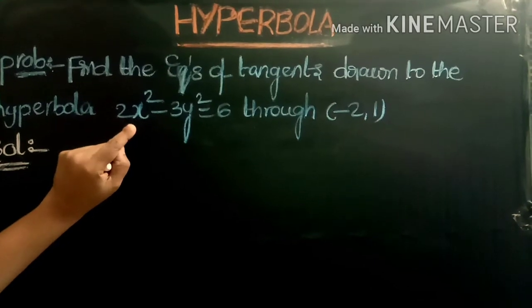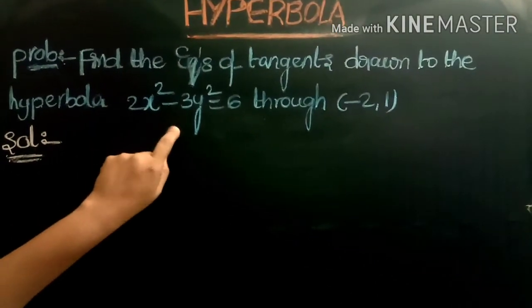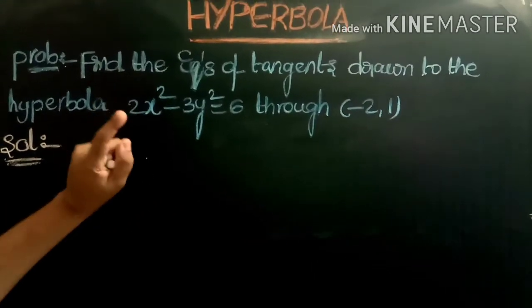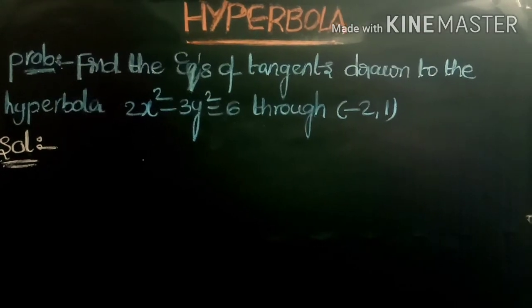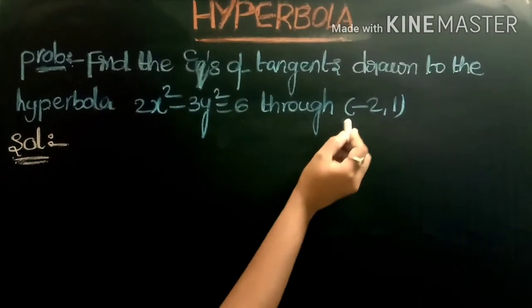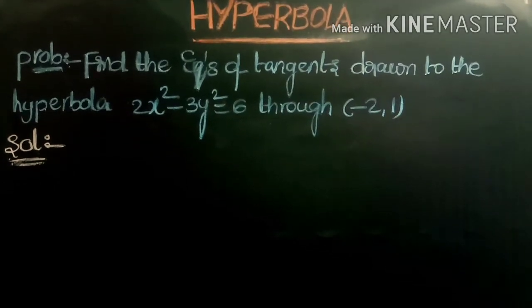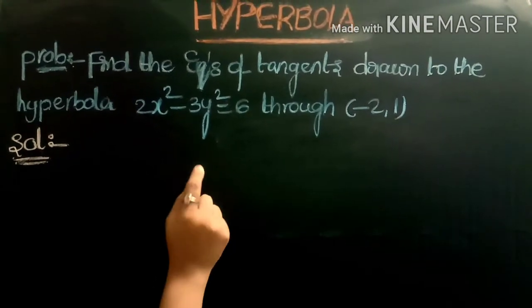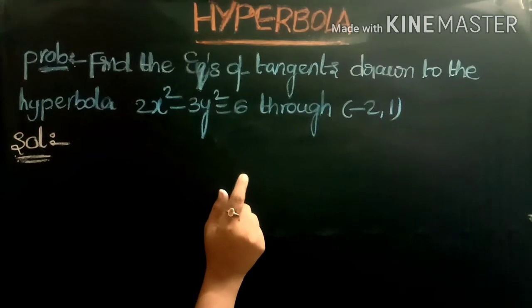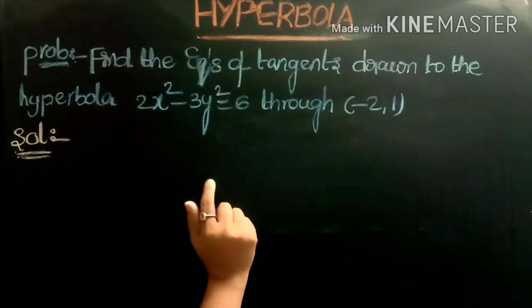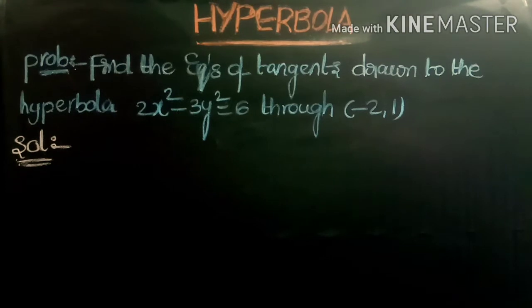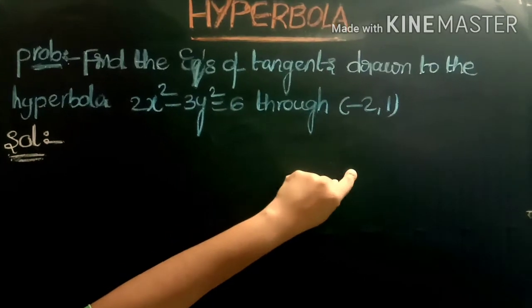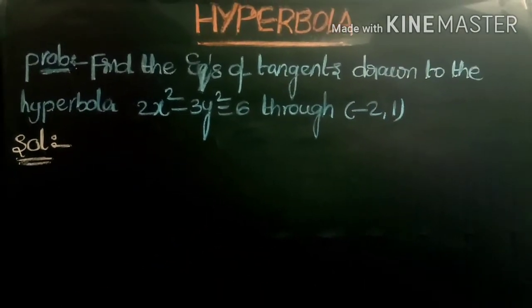Next problem: Find the equations of tangents drawn to the hyperbola 2x squared minus 3y squared equals 6 through the point (-2, 1). We use the equation of the tangent with slope m: y equals mx plus or minus square root of (a squared m squared minus b squared). We substitute the a squared and b squared values and the given point to find m, then determine the tangent equations.